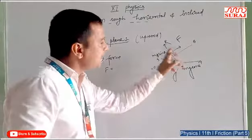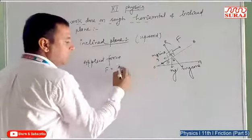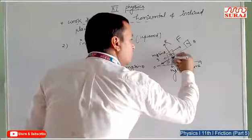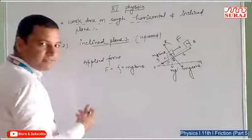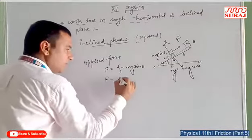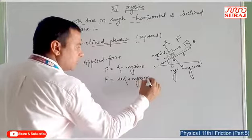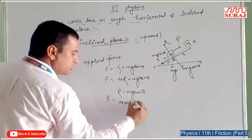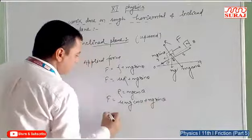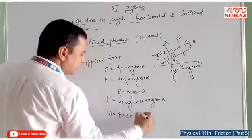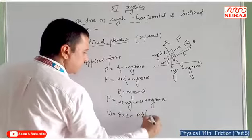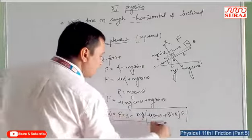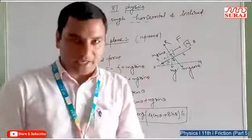The applied force must be equal to mg sinθ plus the force of friction. The force of friction F equals μR, and from the diagram R equals mg cosθ. Putting the value of R, the applied force equals μmg cosθ plus mg sinθ. Then the work done W equals force into displacement: taking mg as common, W equals Mg(μcosθ + sinθ) × S. This is the work done on the rough inclined plane when the body is moving upward.